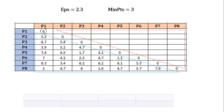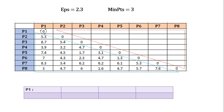Looking at point p1, we check the distance from p1 to each point and see if any distance is less than epsilon value of 2.3. There is only one distance less than 2.3 for p1, which is zero from itself. So p1 is a border or noise point. For point p2, it similarly has only one distance less than epsilon — zero from itself — so p2 is also a border or noise point.